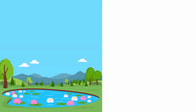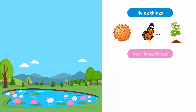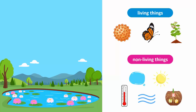So a pond is an example of an ecosystem. We have observed that there are many different types of living things within an ecosystem, from microorganisms to insects and plants. These living things depend on non-living things like water, sunlight, temperature, air, and nutrients for their survival.